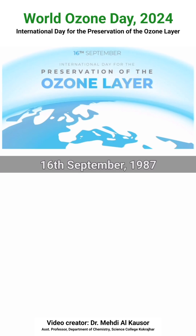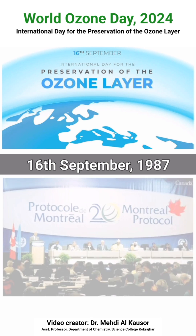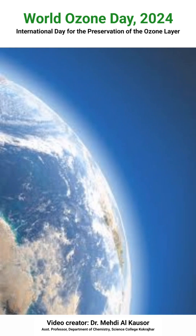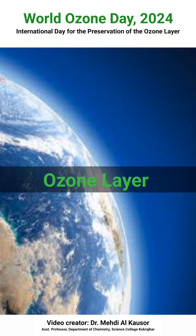Why is Ozone Day celebrated on 16th September? On 16th September 1987, at Montreal, a city located in Canada, an international agreement was signed by 197 countries under the leadership of the USA. This agreement is known as the Montreal Protocol. The protocol aims to protect the ozone layer by reducing the production and consumption of ozone depleting substances.